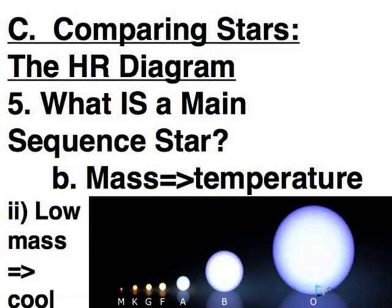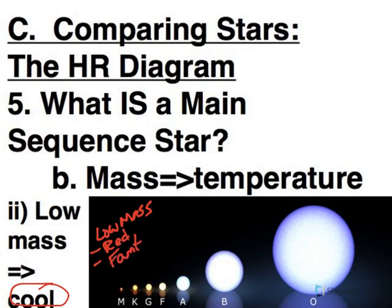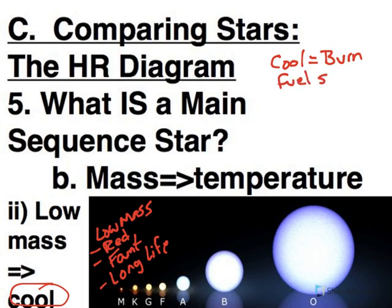The other extreme are the low mass stars, and these stars are quite cool — that's your M and K stars. They're red and faint, and they have a very long life. It has to do with the temperature: cool means burning the fuel slowly. So the low mass stars are the energy-efficient cars.